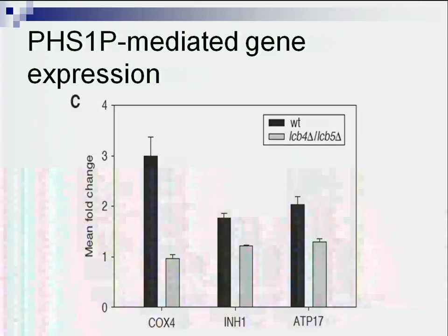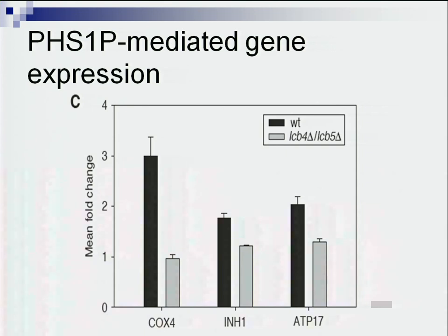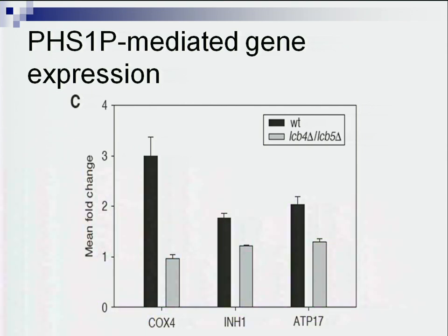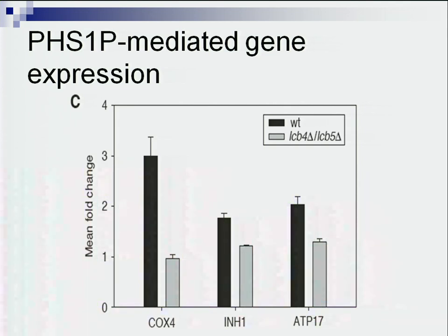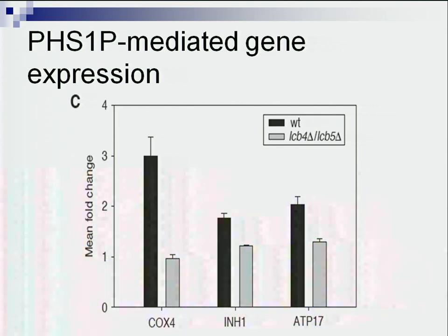This is another validation experiment: we use the precursor of S1P to treat the cells. Normally the cells can turn the precursor - dihydrosphingosine or phytosphingosine - into phytosphingosine-1-phosphate. But if it is in a mutation, this phosphorylation step is blocked. Indeed we can see that if we treat cells with the precursor, we increase the expression, but in the knockout cells this induction disappears. So this is a different way to indicate that these lipids are really affecting the expression of these genes.